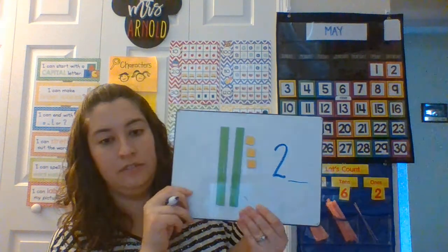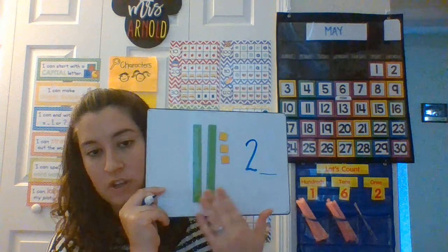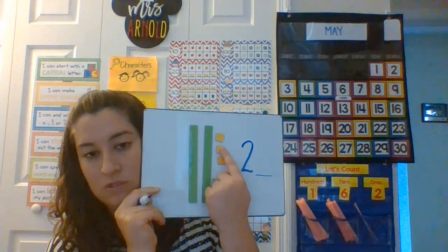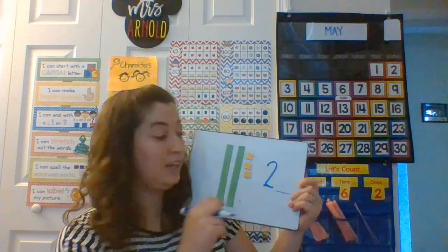Now keep that 20 in mind because we are going to stretch it a little. This time I have two groups of 10 and three more. I left this two up here so you can think about what goes here. I had 20 without those guys and I added those on. So 10, 20, 21, 22, 23. And look at that — I have two 10s, three 1s. That makes 23.